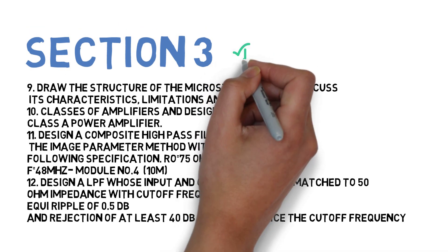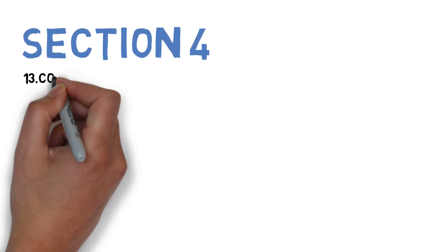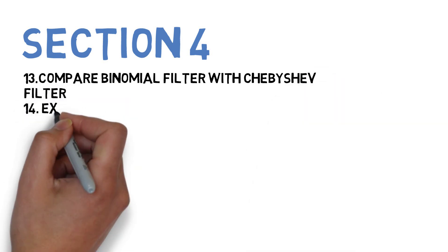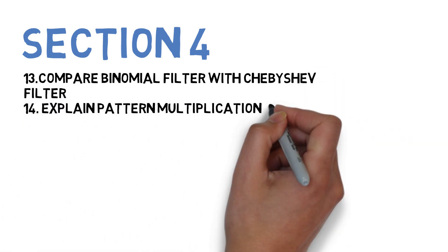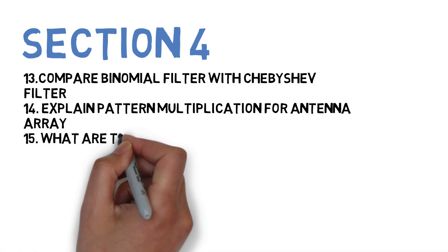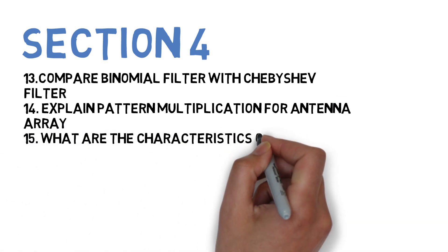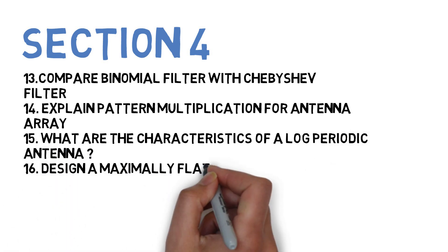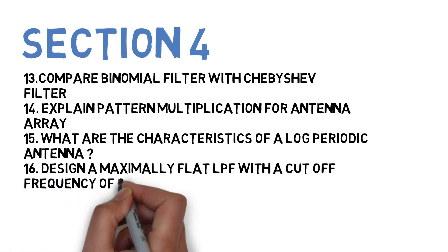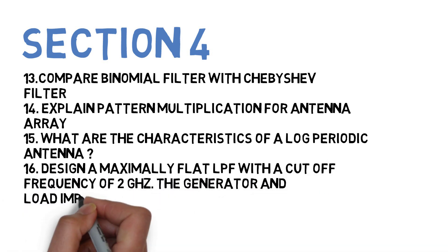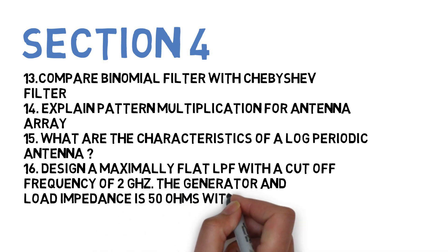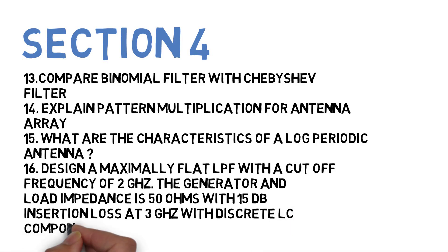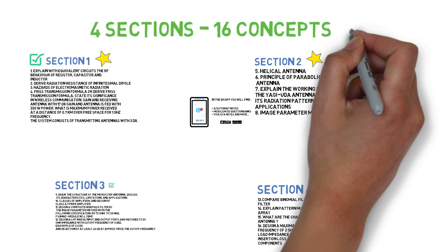For Section 4: compare binomial filter with Chebyshev filter; explain pattern multiplication for antenna arrays; what are the characteristics of log-periodic antenna; and design a maximally flat LPF with a cutoff frequency of 2 GHz, generator and load impedance of 50 ohms, 15 dB insertion loss at 3 GHz, using discrete LC components.